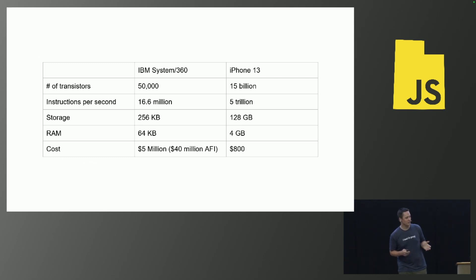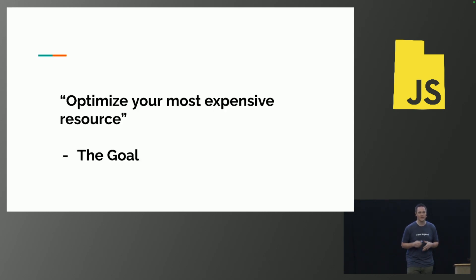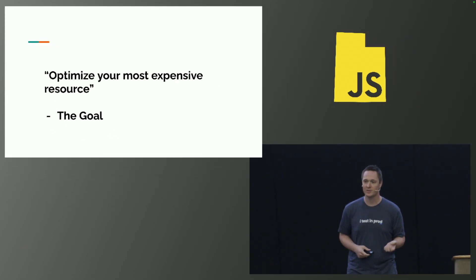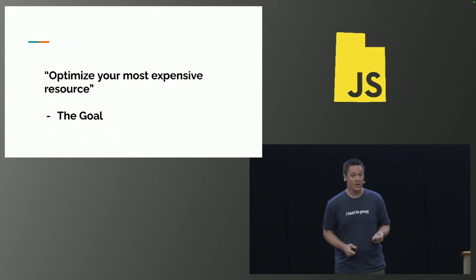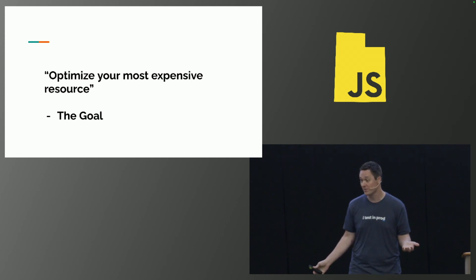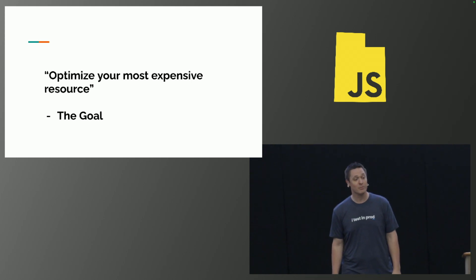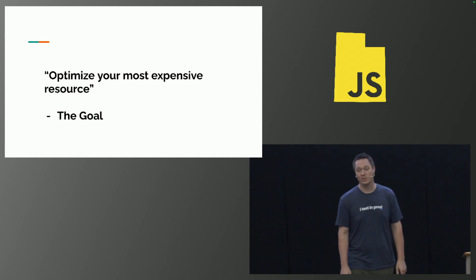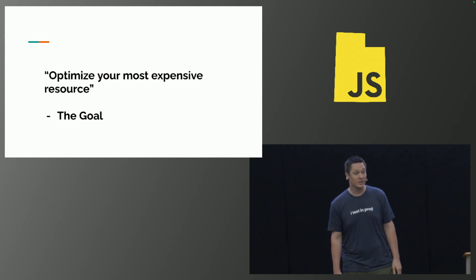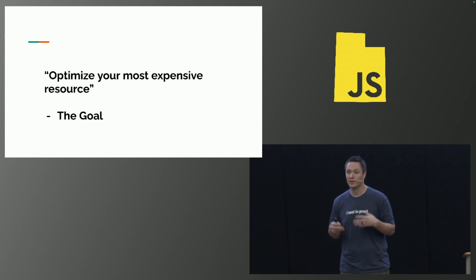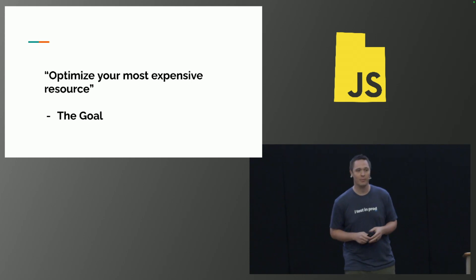And this is a big deal because if you learn anything about running a business, it's that you optimize your most expensive resource. Now in 1970, if you were to spend $5 million on this IBM System 360, that would most definitely be your most expensive resource. And so it would make sense that you would need to take the time to optimize everything you ran on that computer.